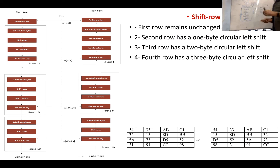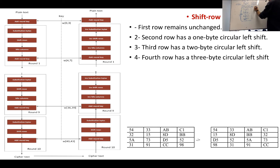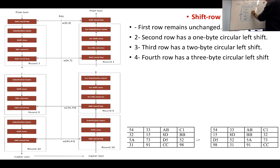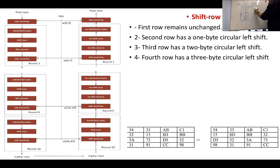The next step it goes into is what's called the shift row transformation. We went through the S box and it should have transformed our 16 bytes. The next step is that we transform the rows in a certain way. The first row stays unchanged — so in this case it would be 1, 2, 3, 4. The second row does a 1-byte circular shift to the left, so we'll get 6, 7, 8 and then 5 comes round. The third row gets shifted by 2.